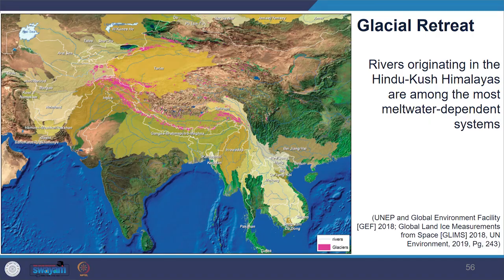Looking at the problem of glacial retreat: because of climate change, there is an impact on the availability of water in regions around the world, particularly areas dependent on meltwater from glaciers. For example, the Hindu Kush Himalayas region is largely dependent on melting water from 10 river systems such as the Amu Darya, Brahmaputra, Ganga, Indus, Irrawaddy and so on.